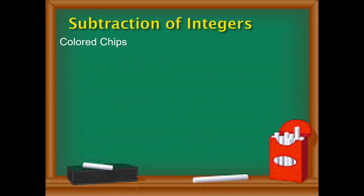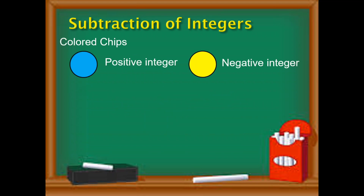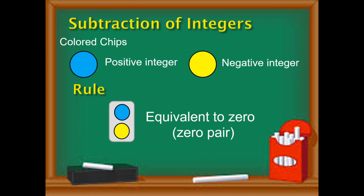Let us try to know how to use the chips. We need to have two chips again. One is blue that represents a positive integer and the other one is yellow that represents the negative integer. Same with addition, we need to have one pair from blue and yellow — one pair is equivalent to zero. That is what we call the zero pair.